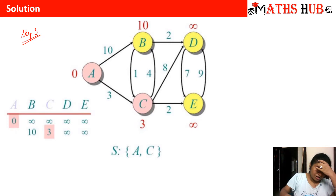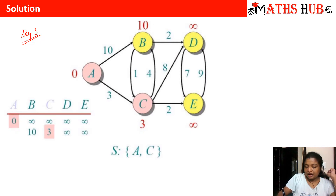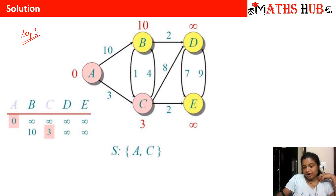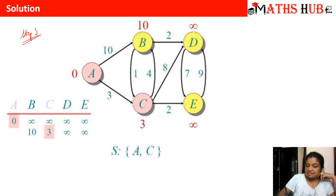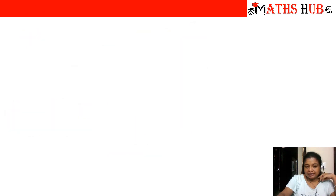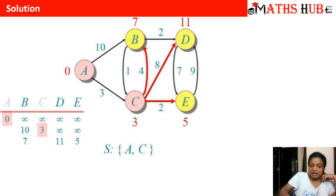Now we have vertices A and C in the source set, and the remaining vertices can be covered through these two. Vertex B can be covered either from vertex A with distance 10, or through vertex C: going A to C (weight 3) then C to B (weight 4) gives distance 7. Out of 10 and 7, the minimum is 7, so we improve the distance for B. Let us write down the new distances in step number four.